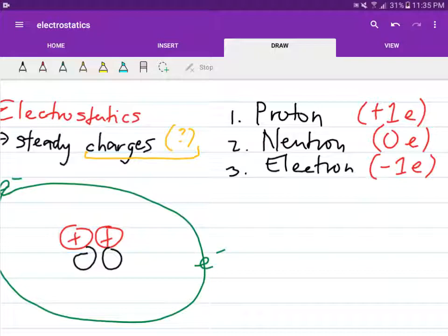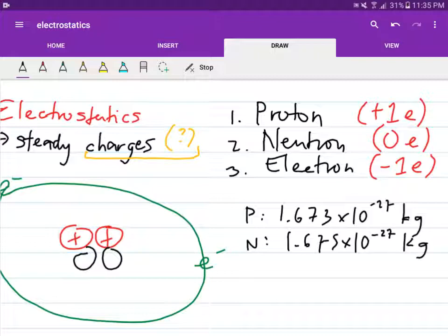So some additional details. The mass of the proton is 1.673 times 10 to the minus 27 kilograms. Mass of neutron is 1.675 times 10 to the minus 27 kilograms, so almost the same as for proton. And for electron, we have 9.109 times 10 to the minus 31 kilograms.